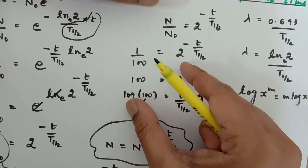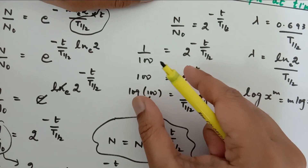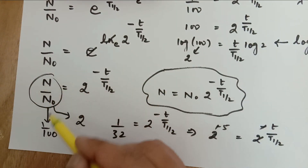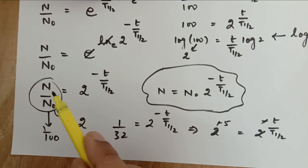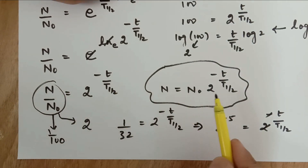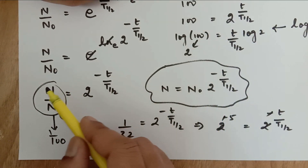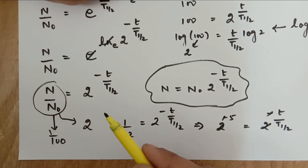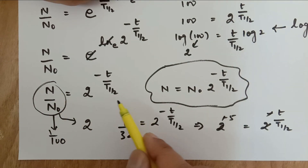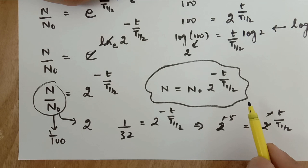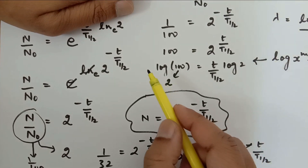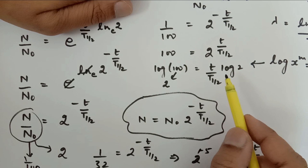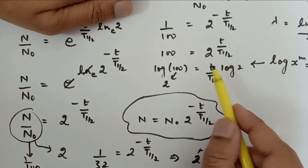So the crux of the entire lecture is: go through the numerical and check whether n upon n₀ is in the form of 2 to the power something or not. If it is, your job becomes very simple. If it is not, you have to apply log on both sides and then solve for t.